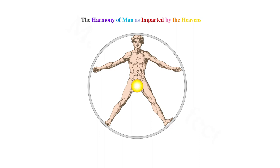Each of the seven planets of antiquity influence the body of man in parallel to their distinct nature. The moon influences the cerebrum, or emotional brain, the oculus sinister, or left eye, and the ventriculus gustus, or taste of the stomach.